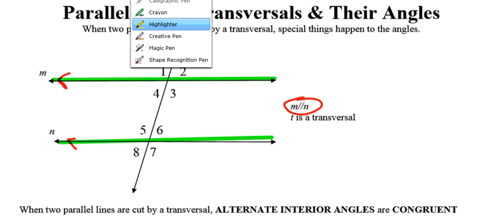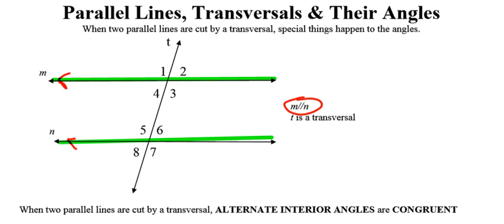T is the transversal. A transversal, very simply, is just a line that intersects two or more other lines. So my transversal in this picture is represented by that blue line.